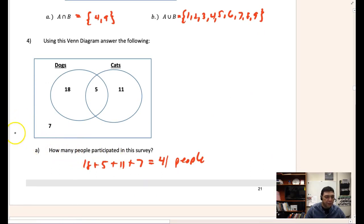Using this Venn diagram, answer the following: How many people participate in the survey? You can see there's 41 people when asked whether you have dogs or cats. What does the 5 mean? 5 people like dogs and cats. 11 like cats only, 18 have dogs only, 7 don't have cats or dogs.